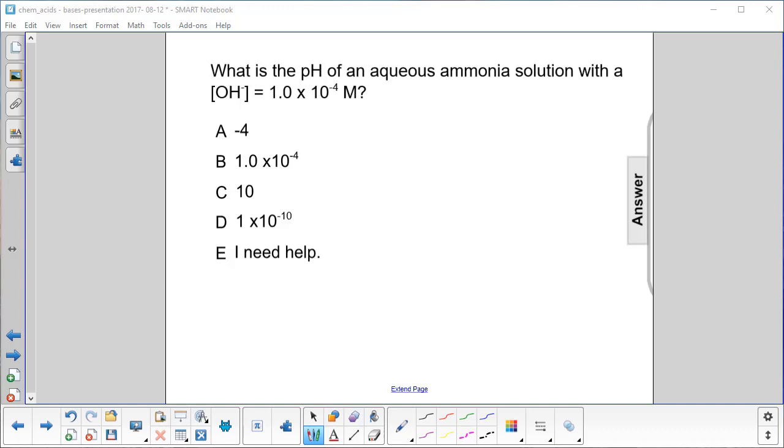What is the pH of an aqueous ammonia solution with the concentration of hydroxide ions of 1.0 times 10 to the minus fourth molars? I'm going to try not to write anything down on this one. Let's look at this.